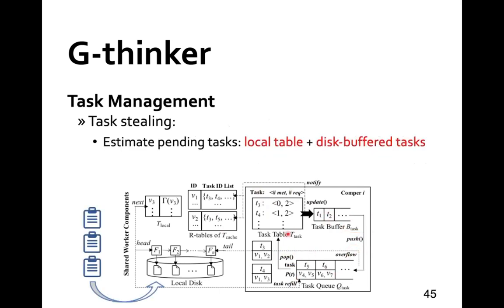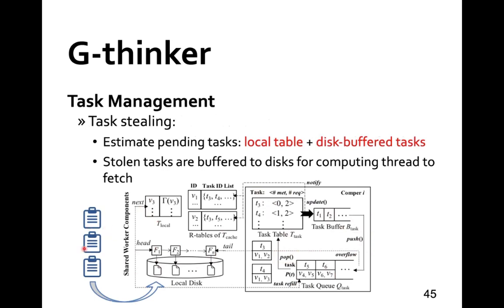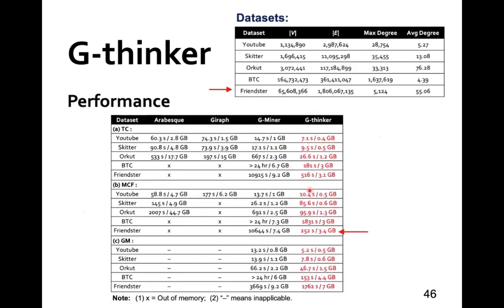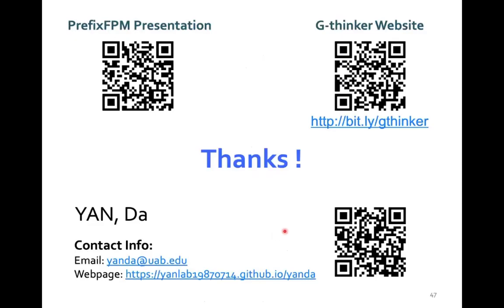For task sharing between machines, we estimate the pending tasks in each machine from the capacity of the local vertex table and task files buffered on disk, to decide effective task-stealing plans. Tasks stolen from other machines are appended to our file list on disk to be refilled into the task queues of computing threads. As shown, G-Synker is orders of magnitude faster than other systems, especially for big graphs. The only competitor is Gminer, which can scale with CPU cores but does not scale well when the graph gets big, due to its bad task scheduling that keeps many partially computed tasks on disk. Thanks for your attention, and please check out our systems online.